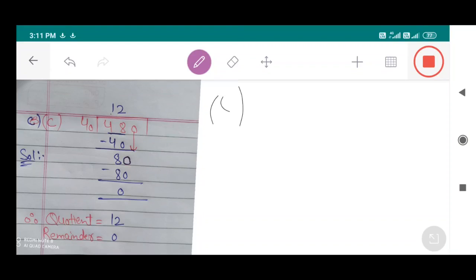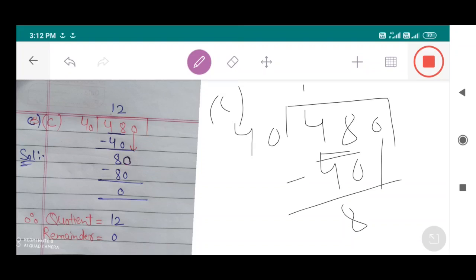Part number C: 480 divided by 40. 40 multiplied by 1 equals 40, which leaves 8, and this 0 comes down. 40 multiplied by 2 equals 80, so 80 minus 80 is 0.